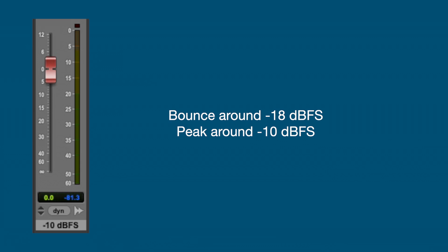Your digital audio workstation can handle levels much higher than that internally. Also, I'm going to keep an eye on where the peak level is — in this case, round about minus 10 dBFS. It doesn't have to be exact. You can go up to minus 6 if you like; minus 6 would be about the highest you'd want to go, and I'll explain why in a moment.